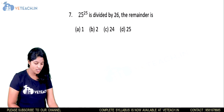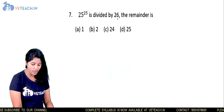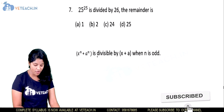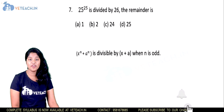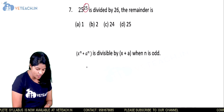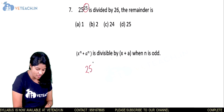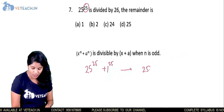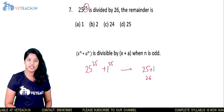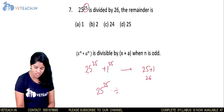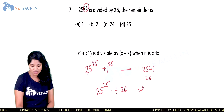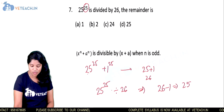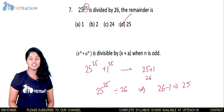Next: 25^25 is divided by 26 — find the remainder. Using the formula: x^n + a^n is divisible by x + a when n is odd. Since 25 is odd, 25^25 + 1^25 is exactly divisible by 25 + 1 = 26. Therefore when 25^25 is divided by 26, the remainder is 26 minus 1 equals 25. Option D is correct.